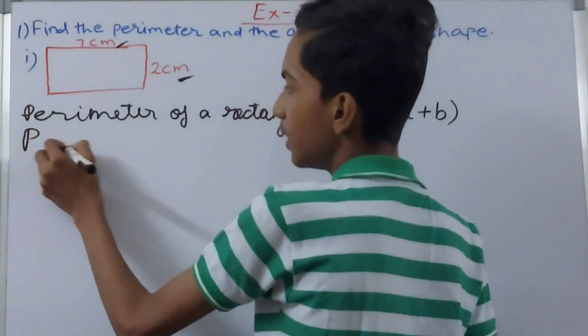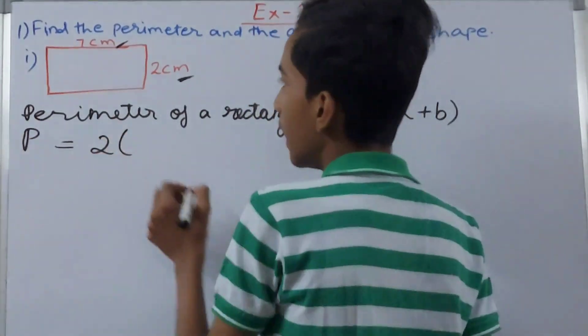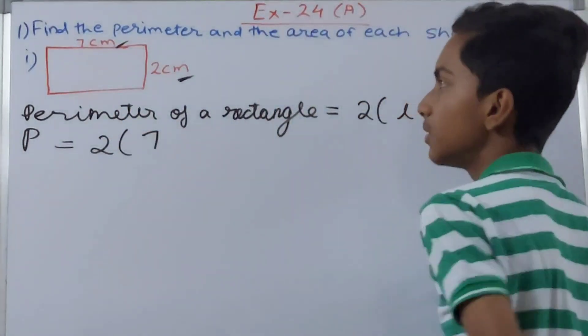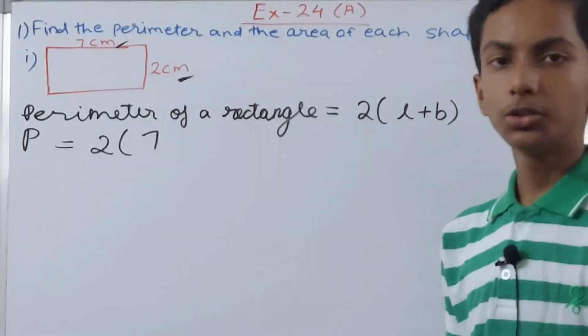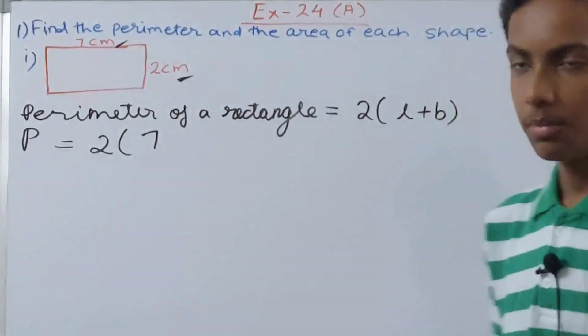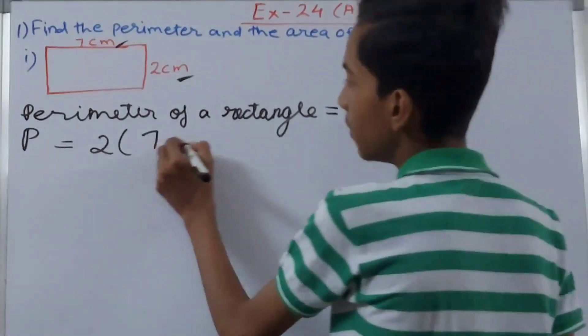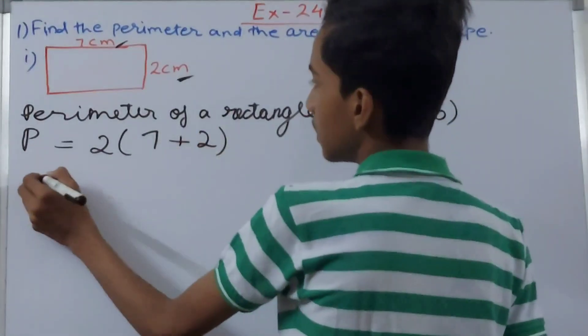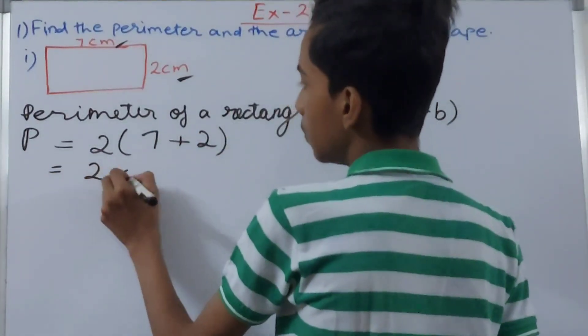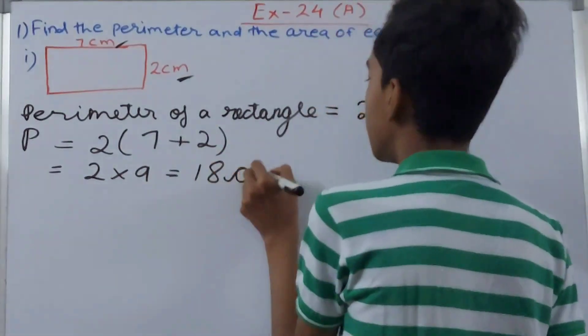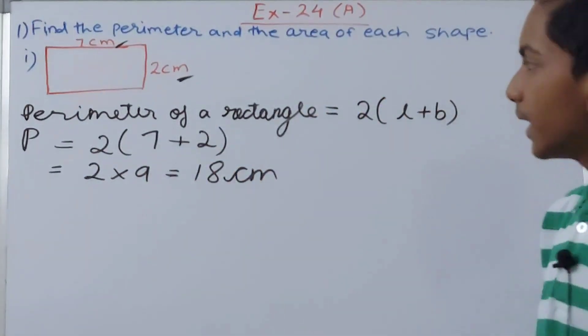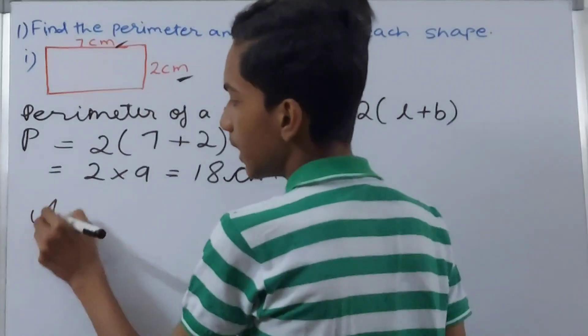The perimeter becomes 2 times length is 7. Always remember the longer side is called the length and the shorter side is called the breadth. So 7 plus 2, that is 2 times 9, and that is 18 centimeter. This is the perimeter.